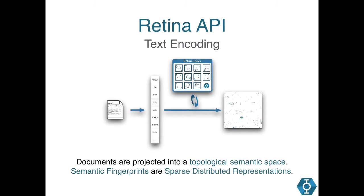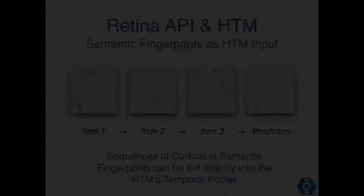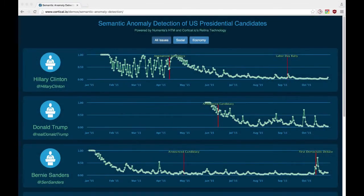We can compute one of these SDRs for any kind of text in a variety of languages. Once you have a semantic fingerprint representation of a piece of text, there are a lot of things you can do with it. One of the cool things about our SDRs is that they're compatible with the HTM and can be fed directly into the temporal pooler. In a way, our API acts as a text encoder and spatial pooler in one. And once you start creating SDRs for text, you can use them to let the HTM learn patterns in human language, detect anomalies, and also make predictions.